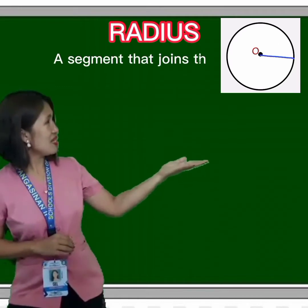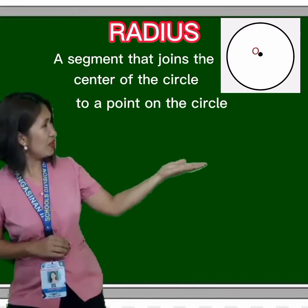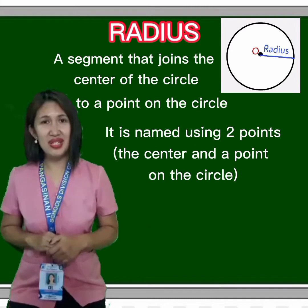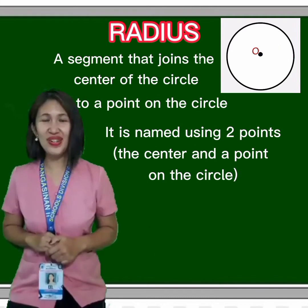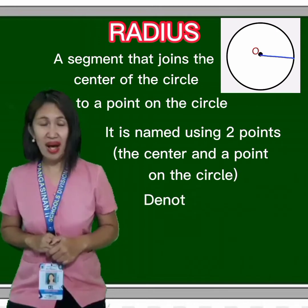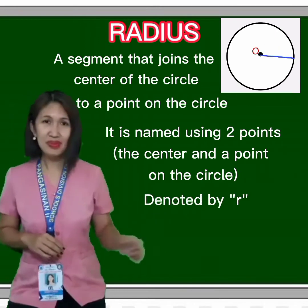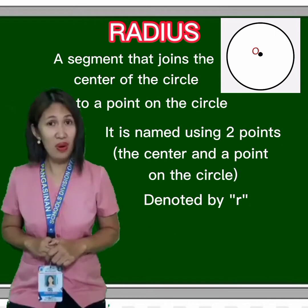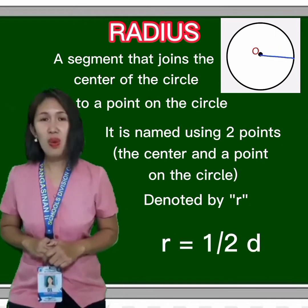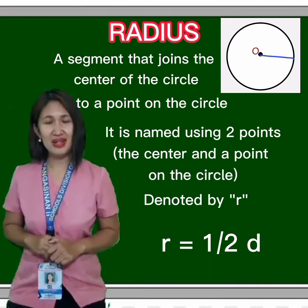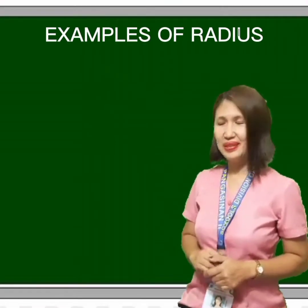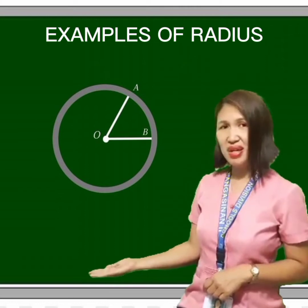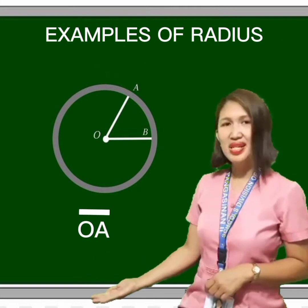Radius is a segment that joins the center of the circle and any point on the circle. It is named using 2 points — the center and any point on the circle — and is denoted by small letter r. Radius is equal to one half the diameter, or r equals one half d. For example, the radii of circle O are segment OA and segment OB.